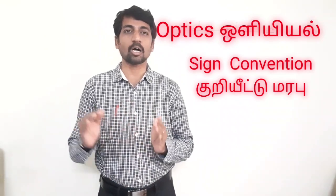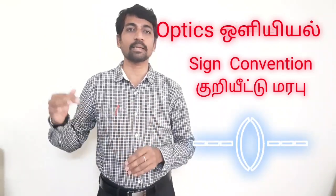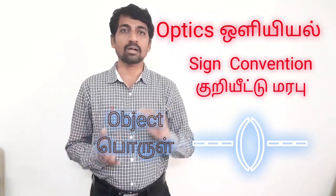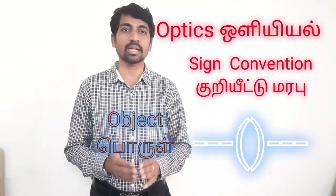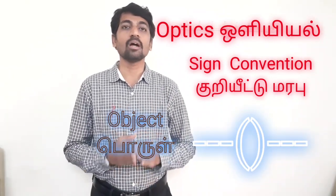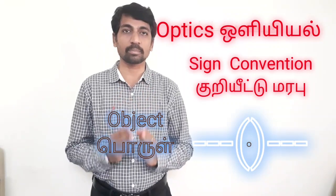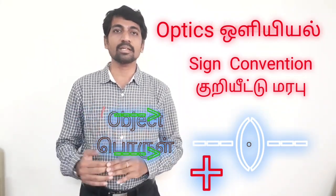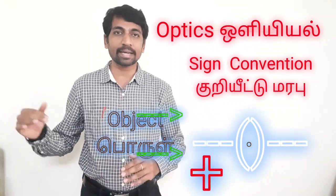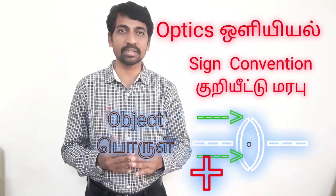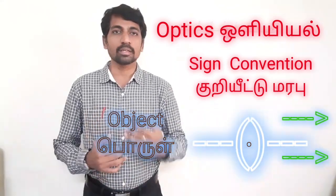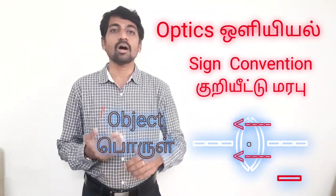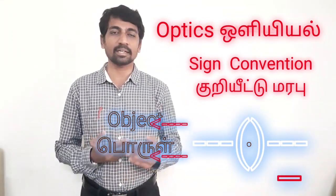If we have an object, we place it on the left side of the lens. Object distance and image distance are measured from the optical center. If a distance is measured in the same direction as the incident light, it is positive. If measured in the opposite direction of the incident light, it is negative.